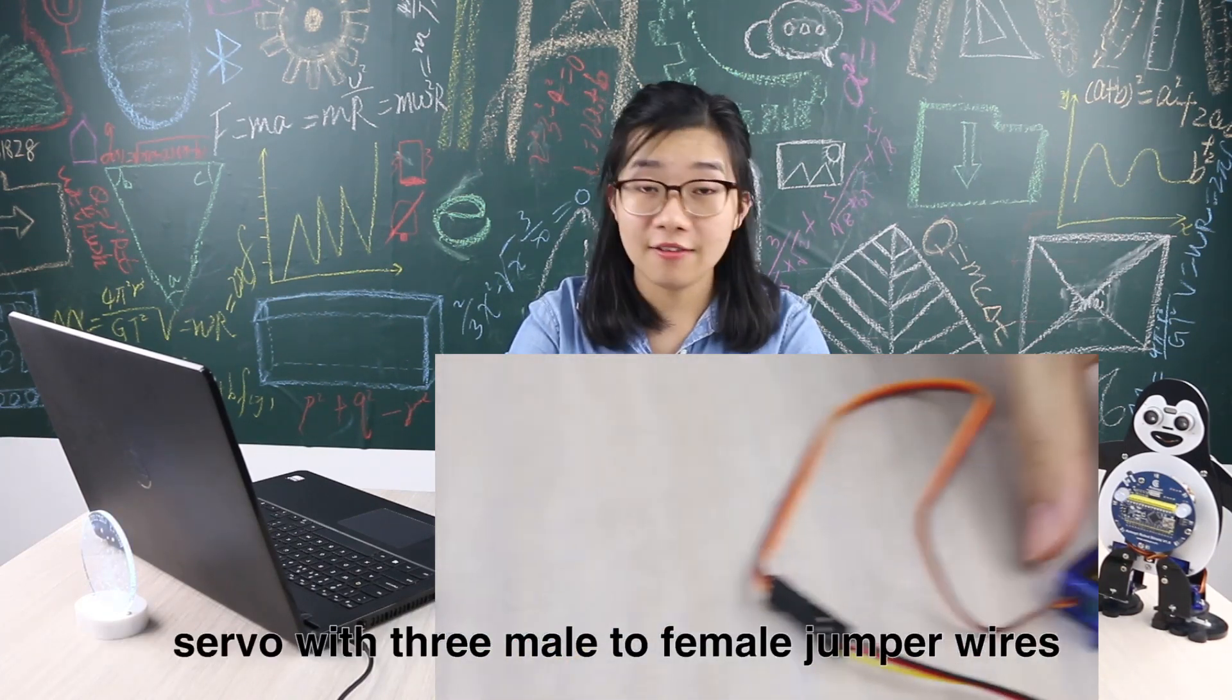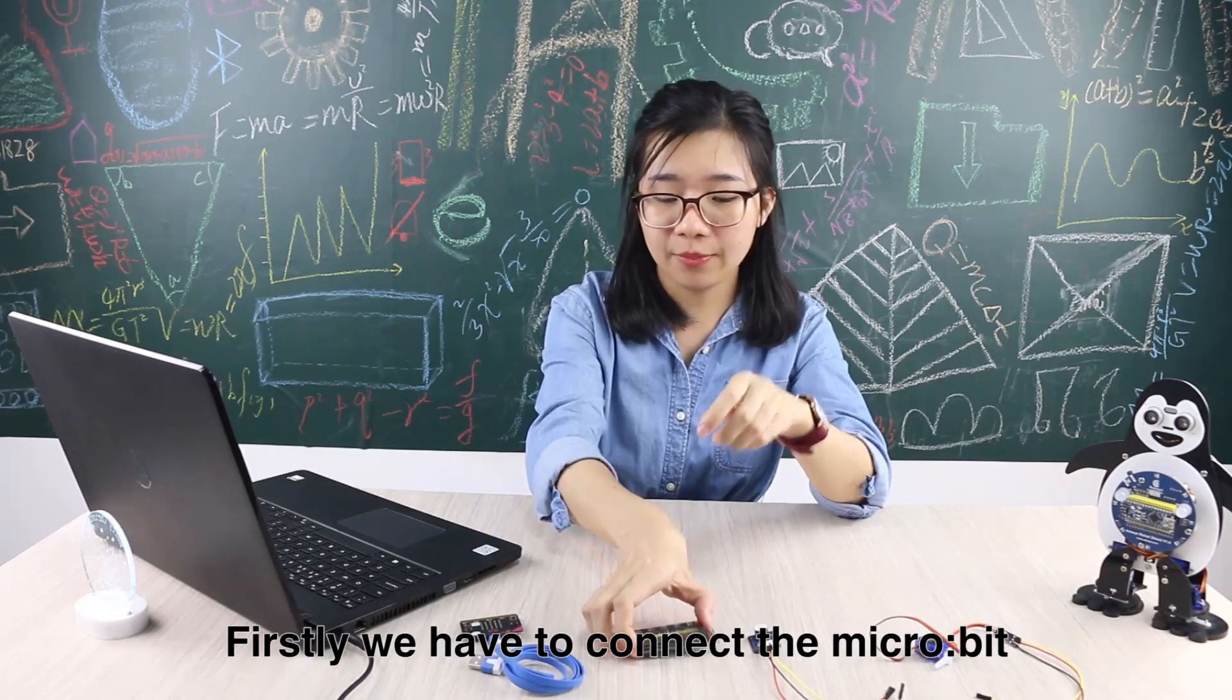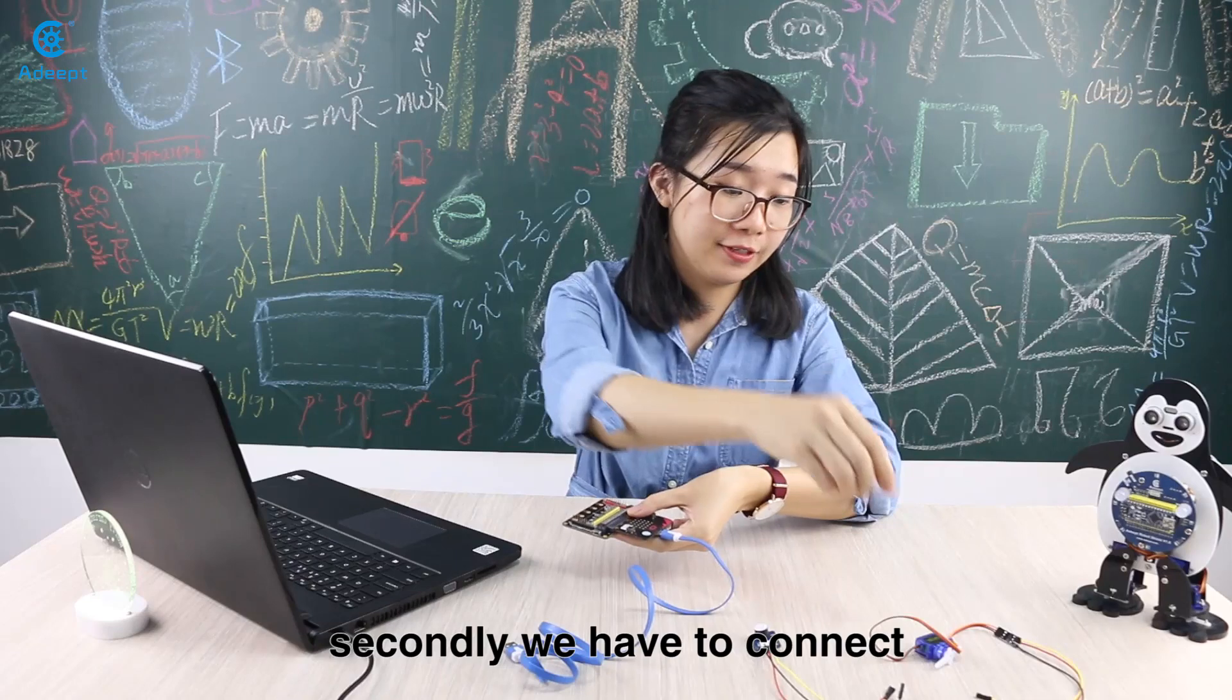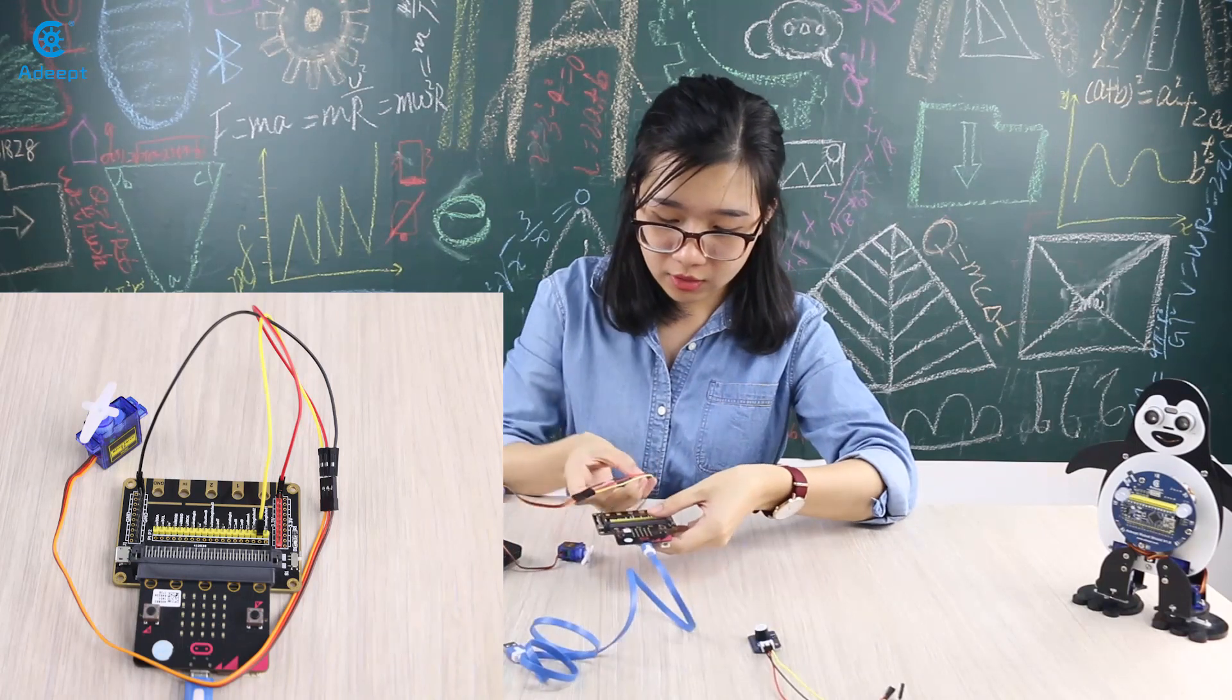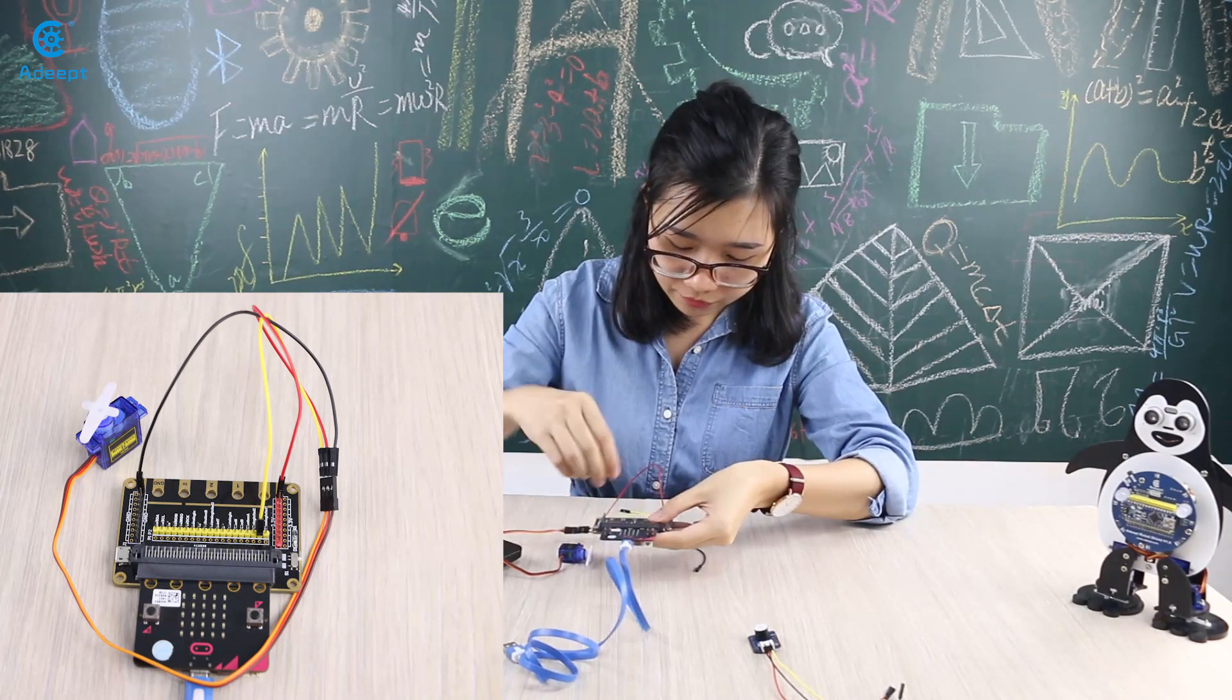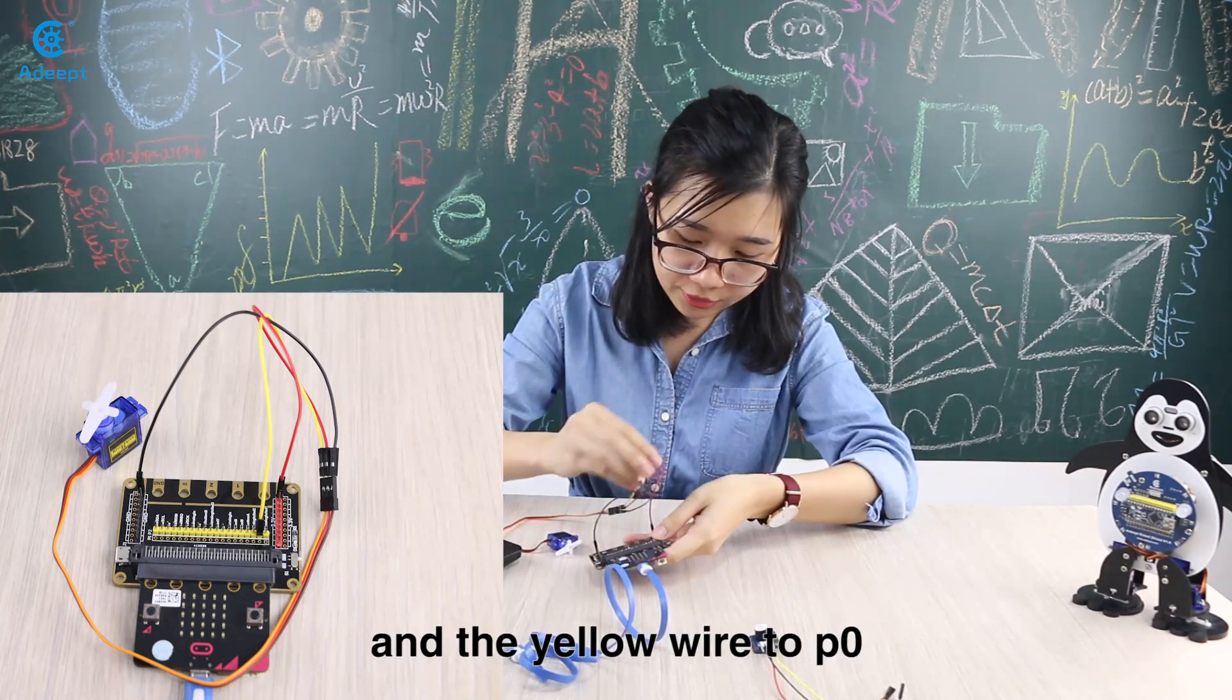Before we start we have to prepare the expansion board, active buzzer with three female to female jumper wires, servo with three male to female jumper wires, besides the micro:bit. Firstly we have to connect the micro:bit with the expansion board. Secondly we have to connect jumper wires with the expansion board: the red wire to anode, black wire to cathode, and the other wire to P0.